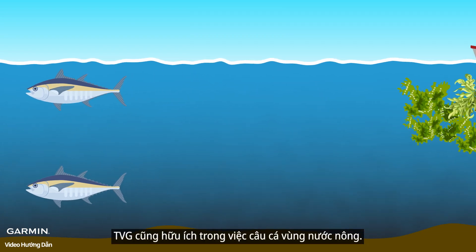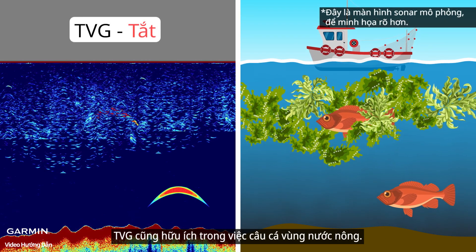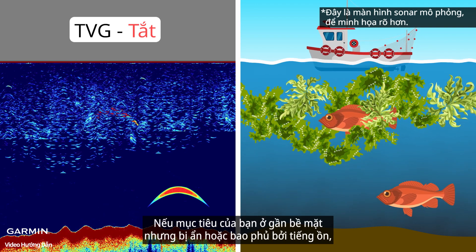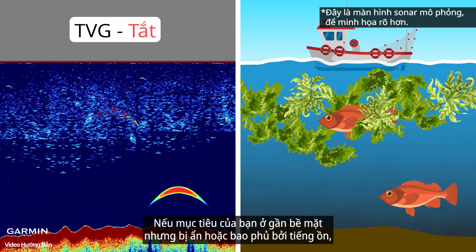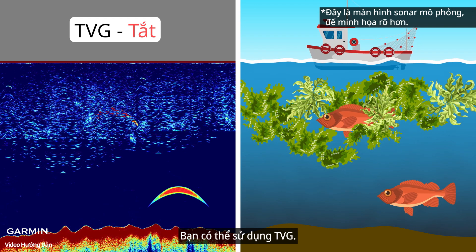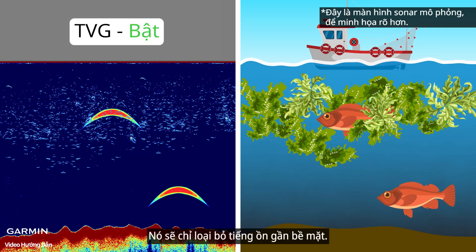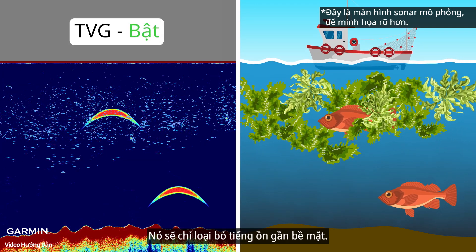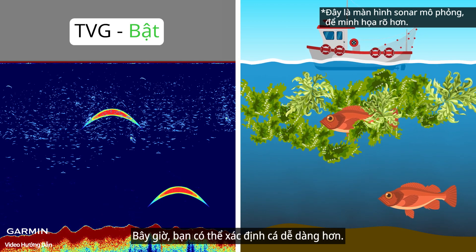TVG is also helpful in shallow water fishing. If your targets are near the surface but are hidden or covered by noise, you can use TVG. It will only eliminate the noise near the surface. Now you can identify fish more easily.